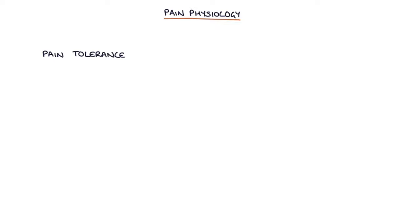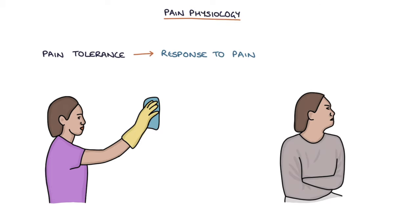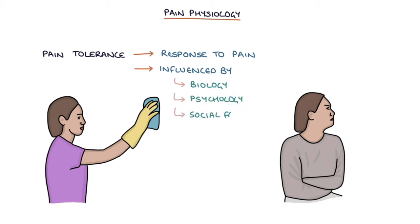Pain tolerance is different to pain threshold. It's more difficult to define and generally refers to a patient's response to pain. One person may experience pain and think little of it and carry on with their activities as normal. Another person may experience a similar pain but worry it indicates a serious underlying illness, take time away from work, and seek medical investigations and treatment. Pain tolerance varies massively between individuals and is influenced by many biological, psychological, and social factors.